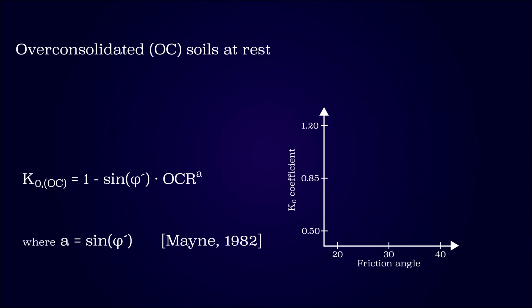The more overconsolidated a soil is, the larger the at-rest earth pressure is. This is because the lateral deformations are only reverted to a lesser degree when the soil is unloaded vertically, whereas the lateral stress tends to lock in. For both normally and overconsolidated soils, multiple expressions have been developed to estimate the at-rest coefficient, because soils vary in their properties, composition, and depositional environment. Field tests can be performed to check or modify the relations for a specific project.